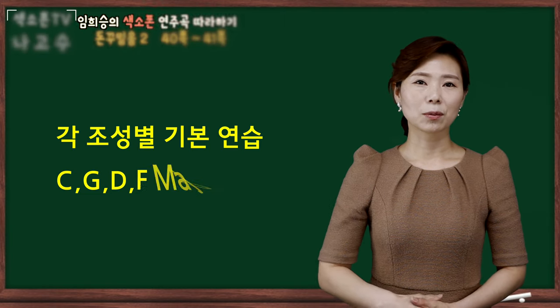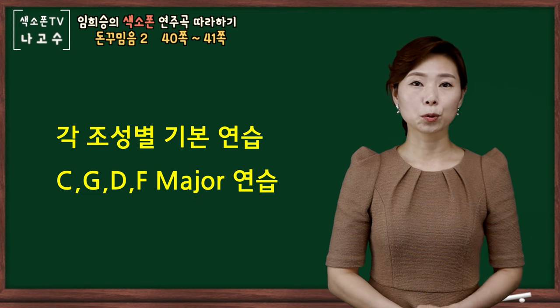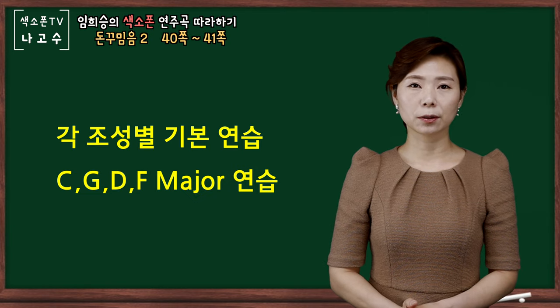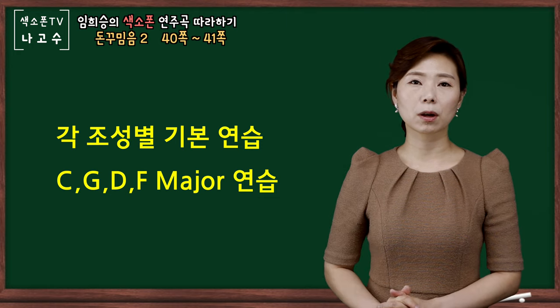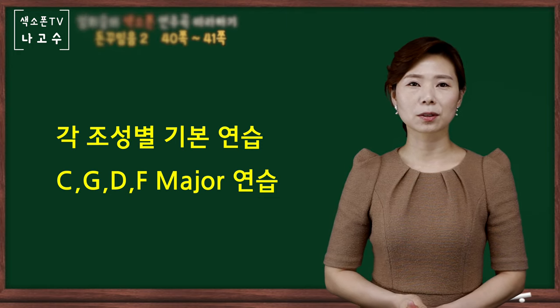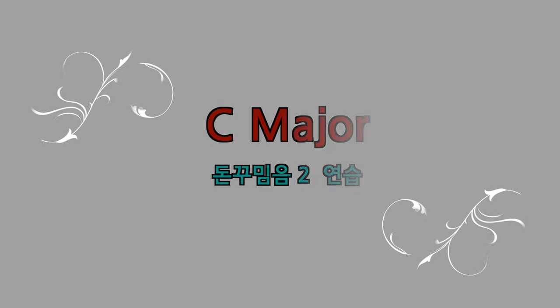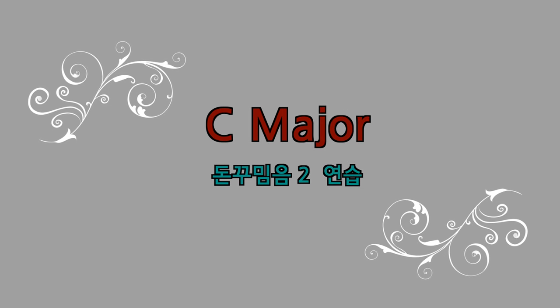다음 영상은 돈 꾸밈음의 두 번째 형태를 C 메이저부터 F 메이저까지 연습한 영상입니다.